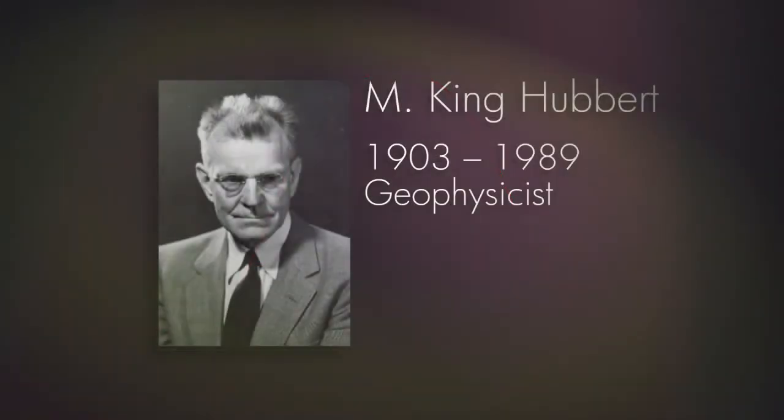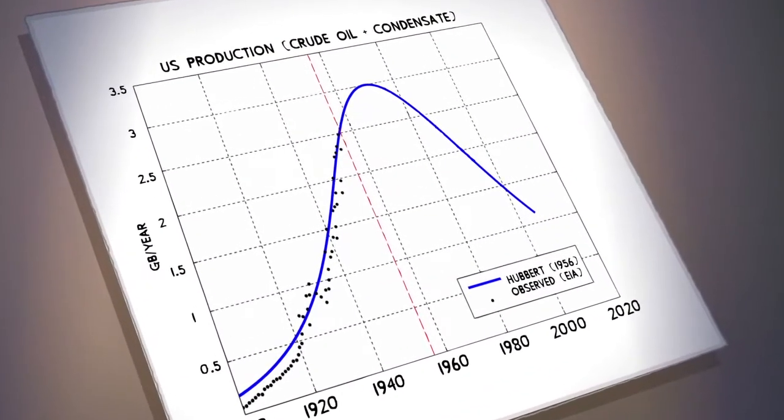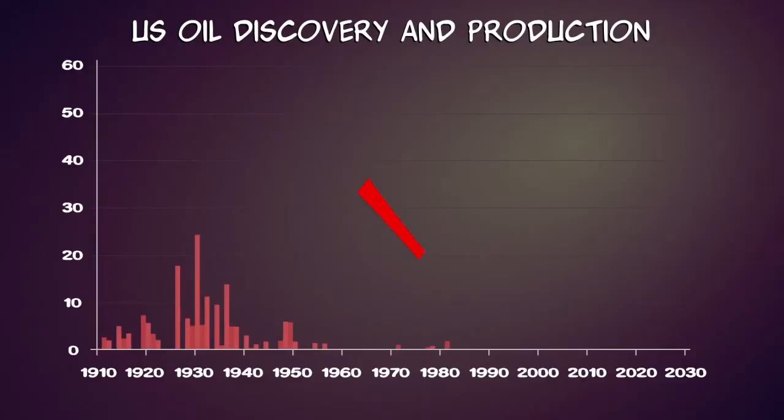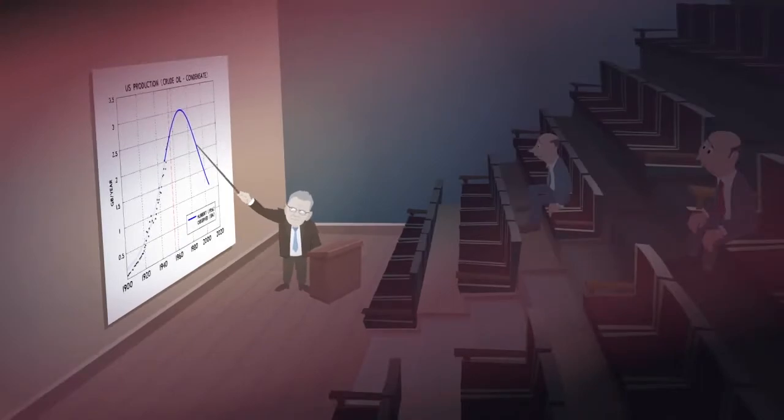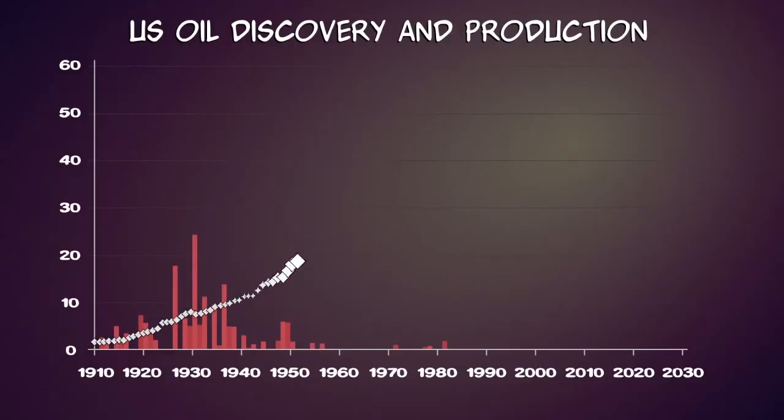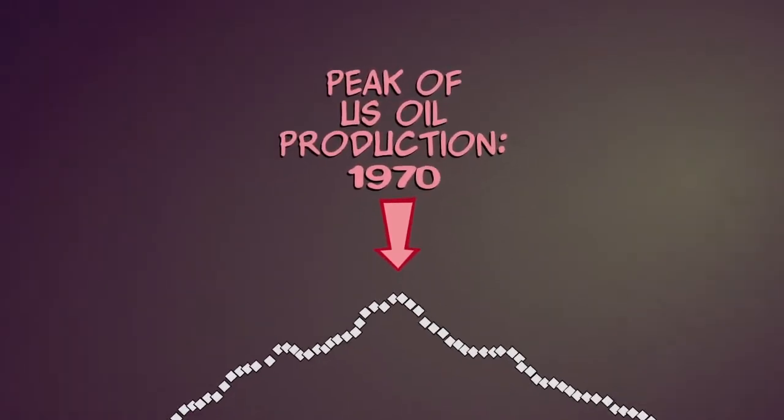In the 1950s, Shell geophysicist M. King Hubbert predicted that America's oil production would peak in 1970, 40 years after the peak of US oil discovery. Few believed him. However, in 1970, American oil production peaked and entered a permanent decline. Hubbert was vindicated.